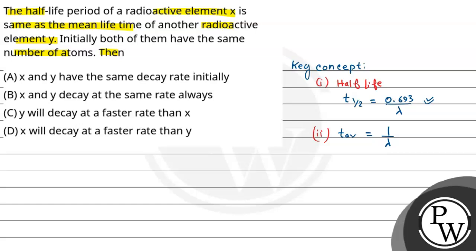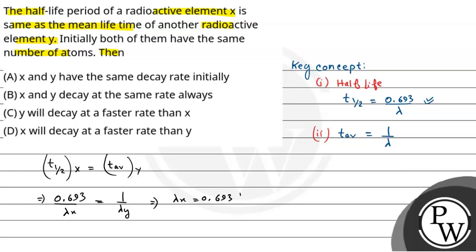Now, what is given in the question is that the half-life of X is equal to the mean lifetime of Y. So t-half of element X equals t-average of element Y. From this we can write: 0.693 divided by lambda-X — taking lambda-X as the decay constant of element X — this equals 1 by lambda-Y.